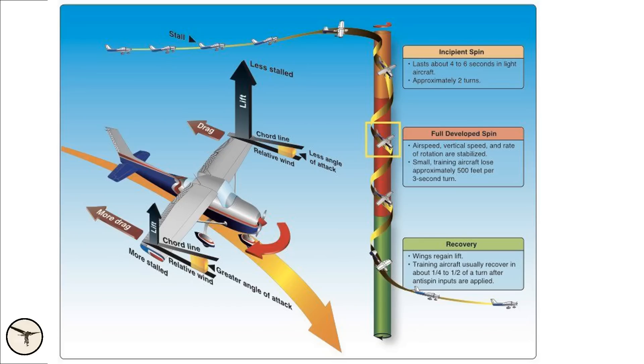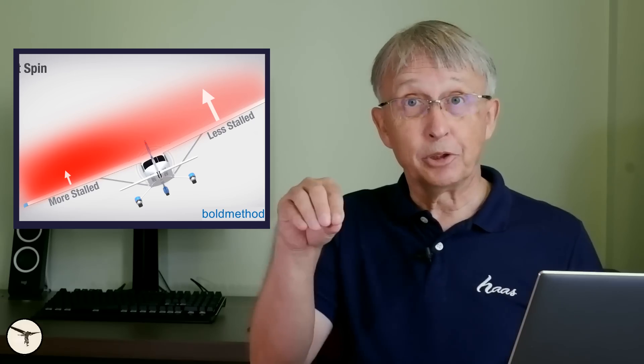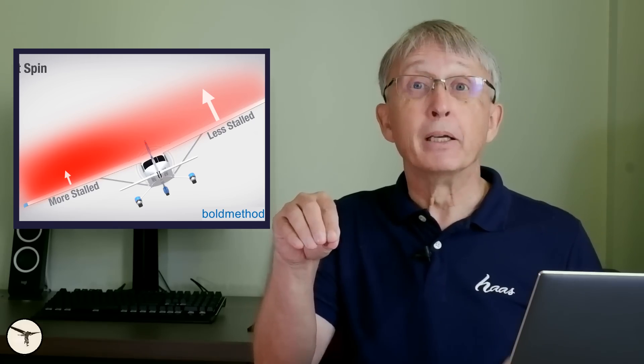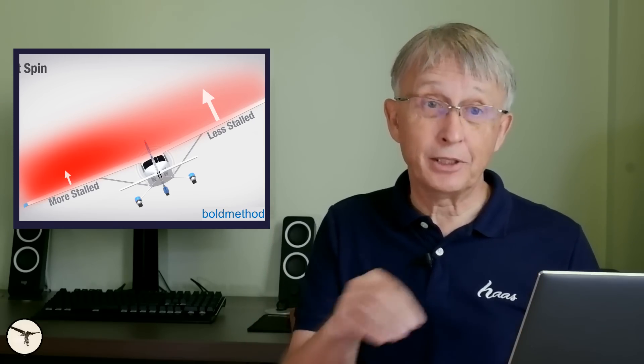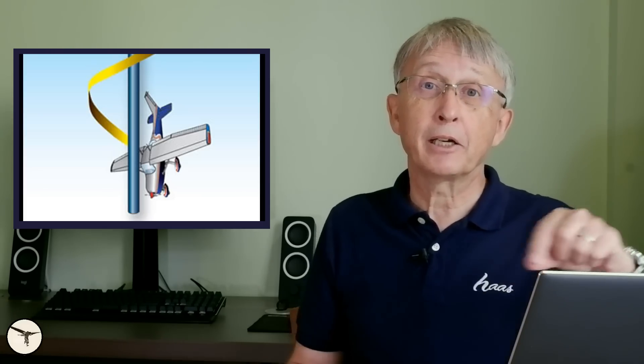This will cause one wing to stall before the other. And as that wing drops, the angle of attack increases further, increasing the stall of that wing, and the aircraft will start to rotate — and that is the spin. In a normal spin, the aircraft is pointing steeply towards the ground.